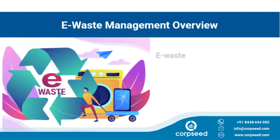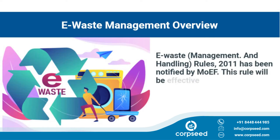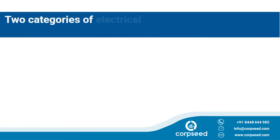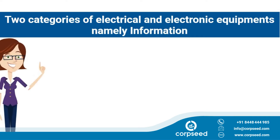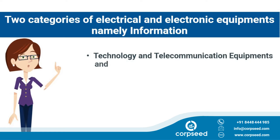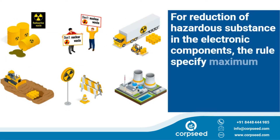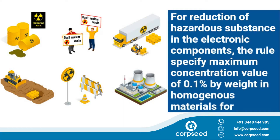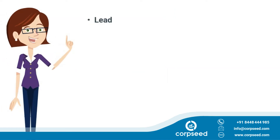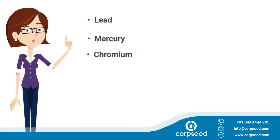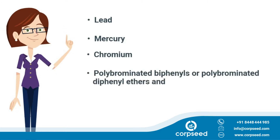E-waste Management and Handling Rules 2011 were notified by MoEF and became effective from 1st of May 2012. Two categories of electrical and electronic equipment — namely information technology and telecommunication equipment, and consumer electricals and electronics — are covered under this rule. For reduction of hazardous substances in electronic components, the rules specify a maximum concentration value of 0.1 percent by weight in homogeneous materials for lead, mercury, chromium, polybrominated biphenyls, and polybrominated diphenyl ethers.